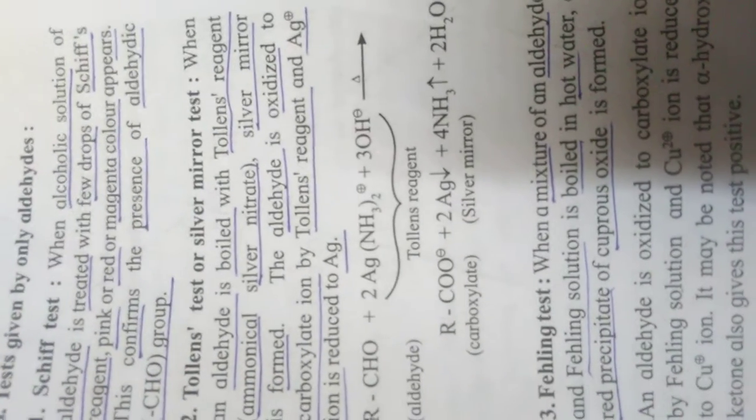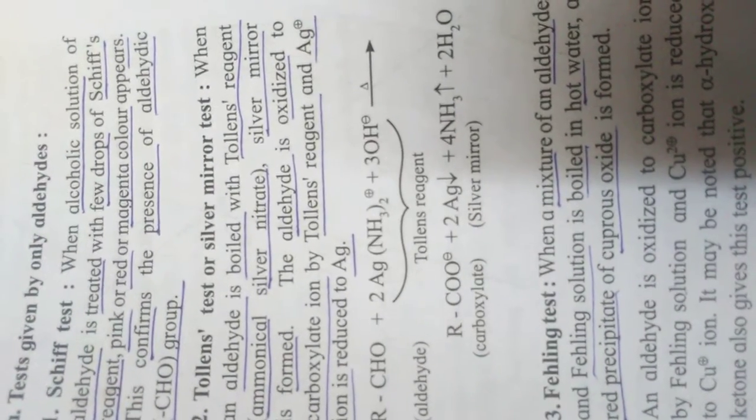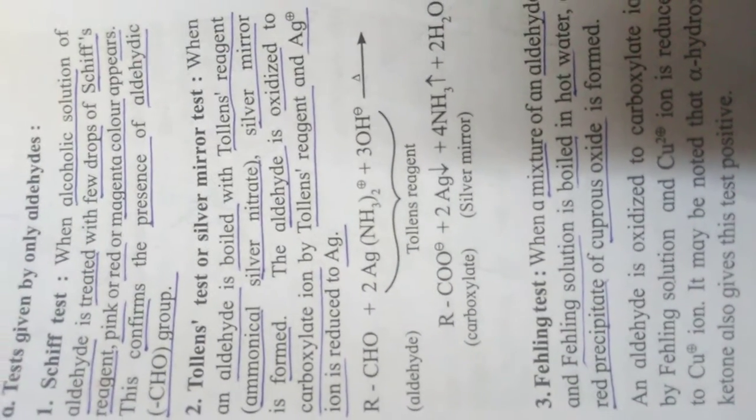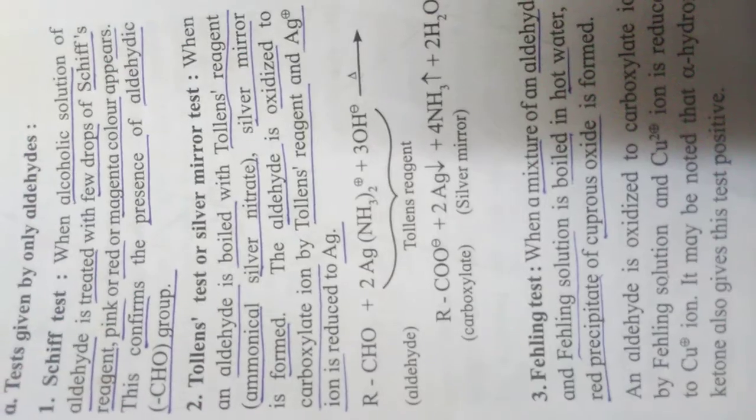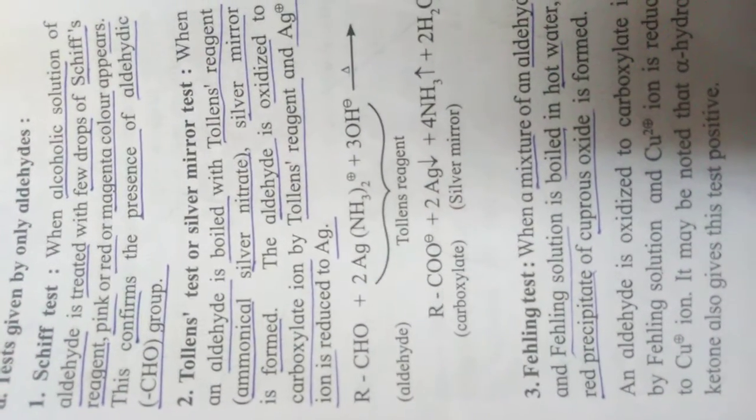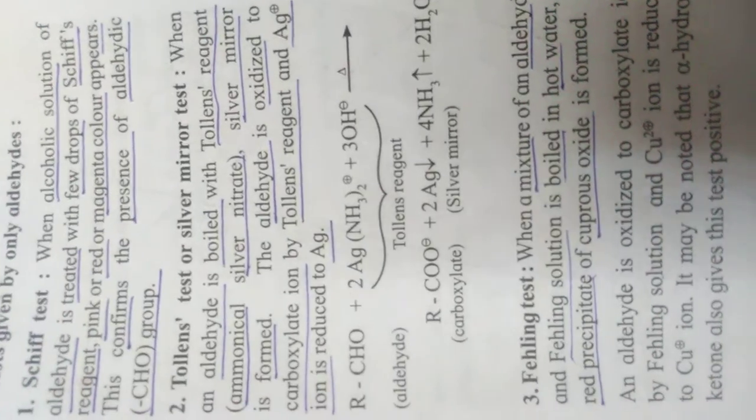Tollens test or silver mirror test: When an aldehyde is boiled with Tollens reagent, a silver mirror is formed. The aldehyde is oxidized to carboxylate ion by Tollens reagent, and Ag+ is reduced to Ag.